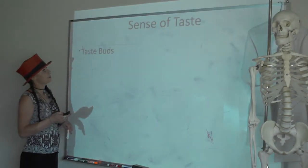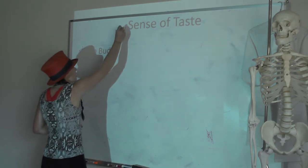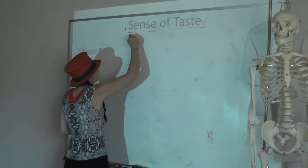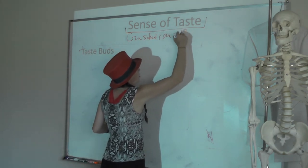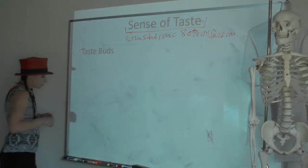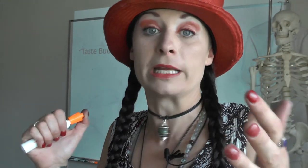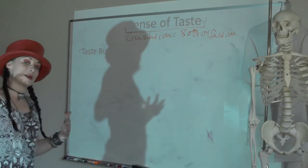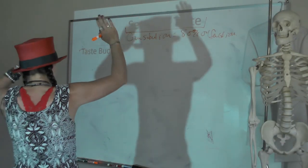Sense of taste — gustation is actually 80% olfaction. Most of your sense of taste comes from your ability to smell. From an evolutionary perspective this makes sense: if you smell something awful you're less likely to put it in your mouth, helping you avoid toxins or poisons, and if something smells pleasant your brain is enticed to eat it.